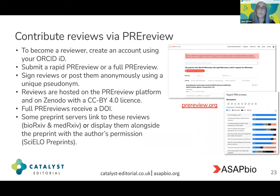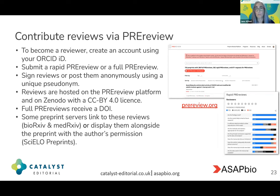If you're considering reviewing through the PREreview platform, to become a reviewer you need to create an account using your ORCID ID. You then have a choice of submitting a rapid pre-review or a full pre-review. You can sign a review or post anonymously using a pseudonym. Reviews are hosted on the PREreview platform itself and also on Zenodo with a CC BY license, and full reviews receive a DOI, making them independently discoverable. Some preprint servers link to these reviews — for example, bioRxiv and medRxiv — or display them alongside the preprint if the author has given permission, for example on SciELO Preprints.